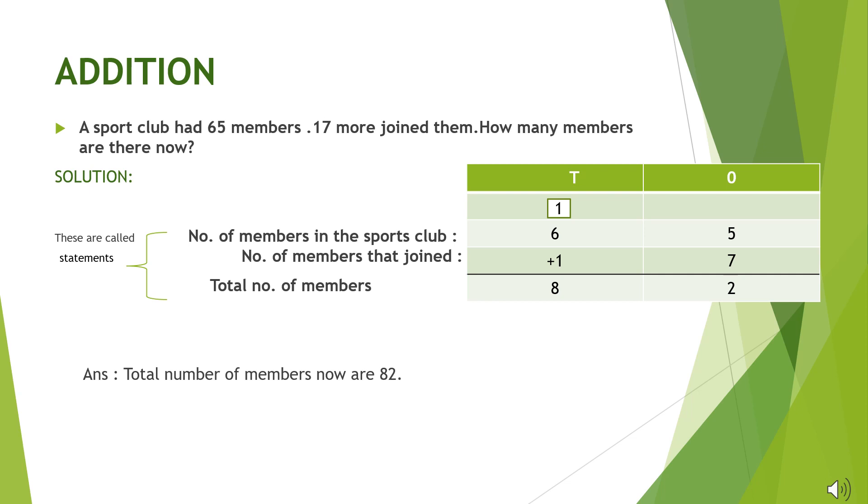In word problems, we frame statements with the help of information given in the question. What is 65 here? 65 is the number of members in the club. So our first statement would be number of members in the club, and then we will write 65 next to it.